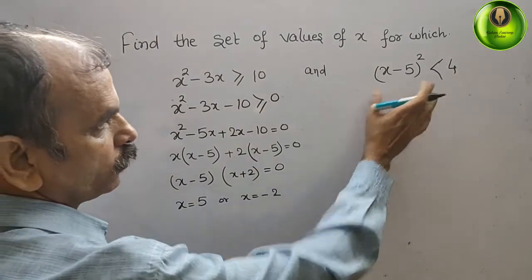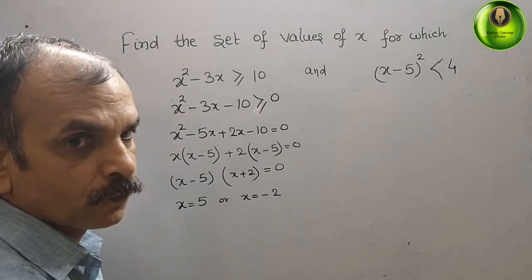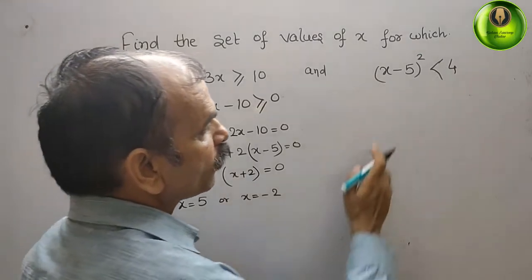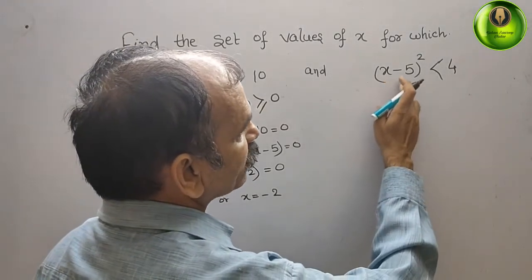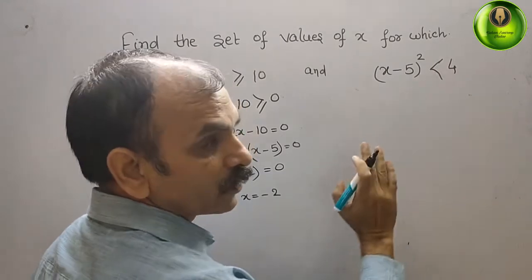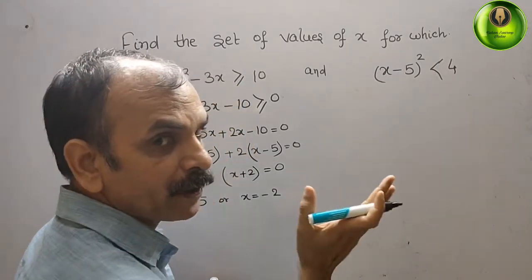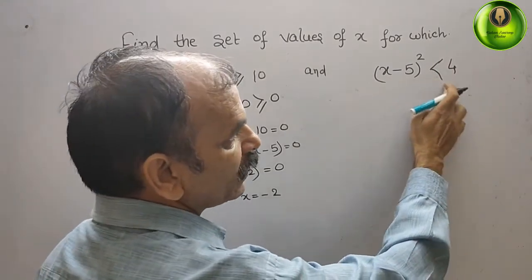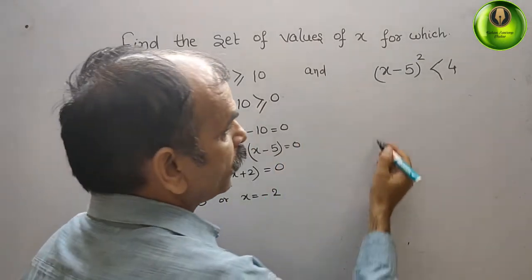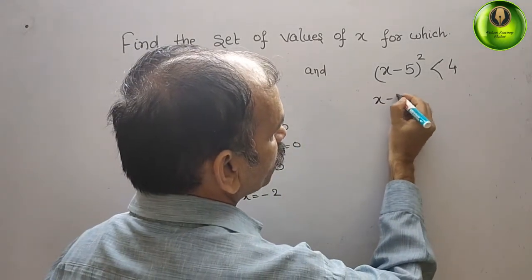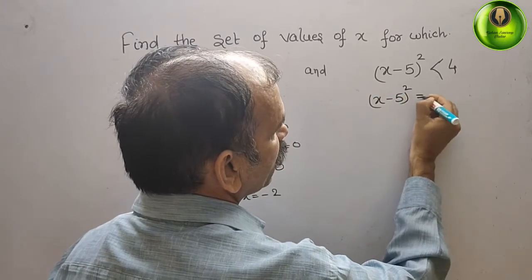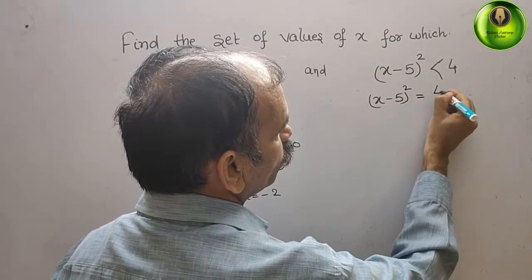Now solve the second inequality as well. We have x minus 5 whole square is less than 4. We first write it as equal to: x minus 5 whole square equals 4.